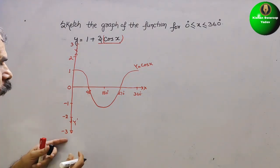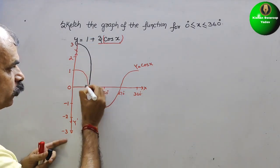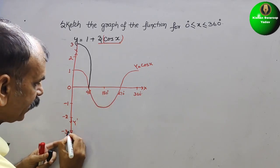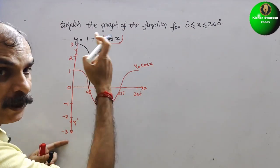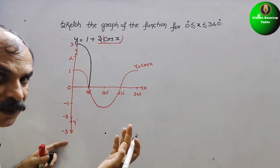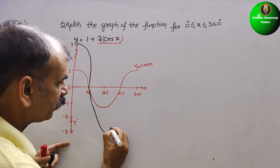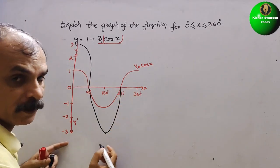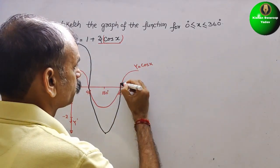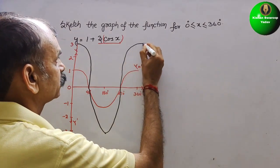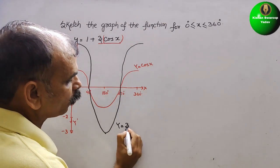So the wave for 3cos x will start from 3 at 0°, go to 0 at 90°, come down to -3 at 180° (since 3 × -1 = -3), go back to 0 at 270°, and return to 3 at 360°. This wave is y = 3cos x.